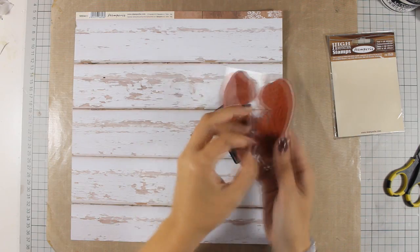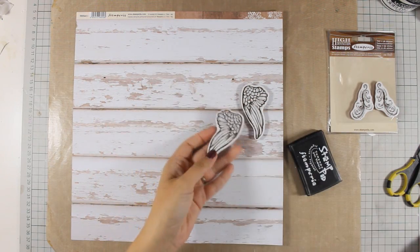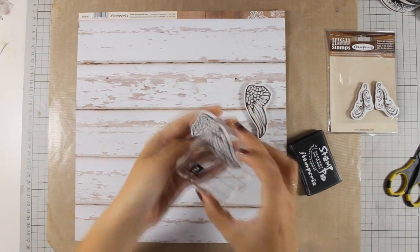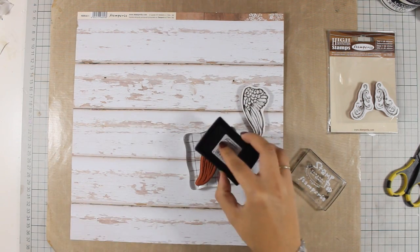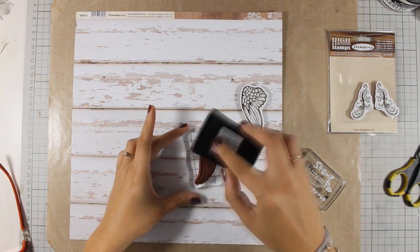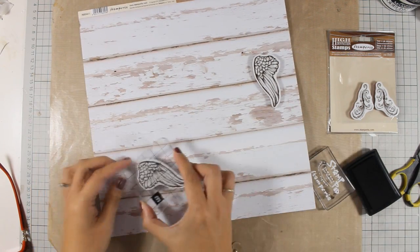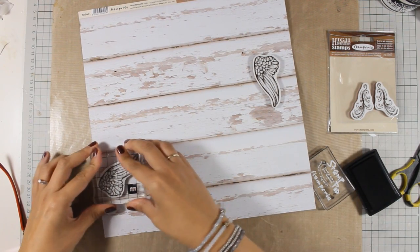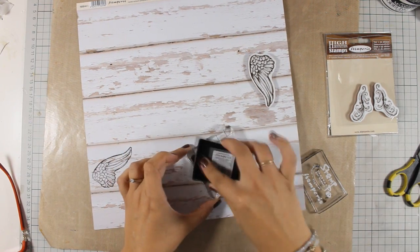And here is another Stamperia stamp with those angel wings which I am going to stamp with black ink again. This time I am going to use another wood grain pattern paper which is white. I like to use these pattern papers because they give a nice texture on my stamped images. So I'm going to stamp the wings two times each and I need those because I plan to add them on my clocks later on.